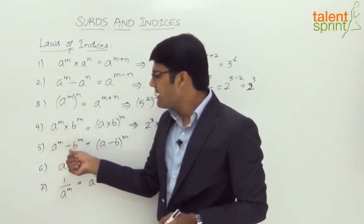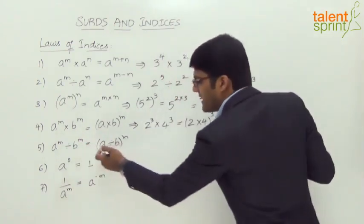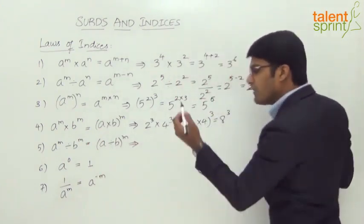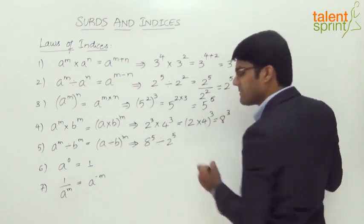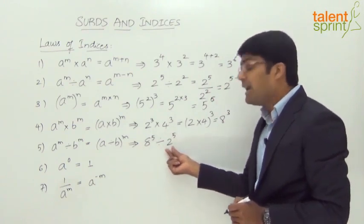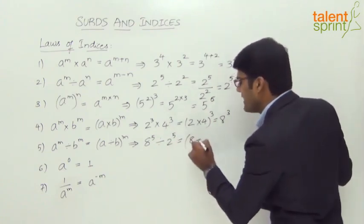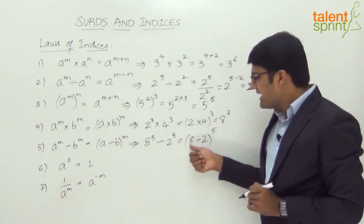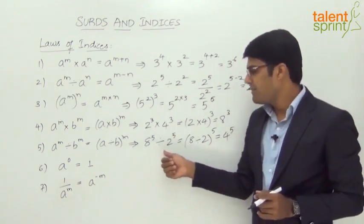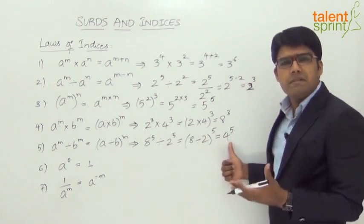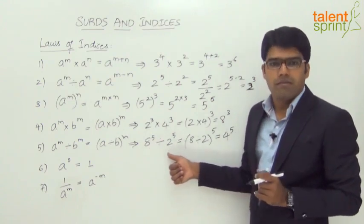The fifth rule is similar but uses division: a to the power of m divided by b to the power of m equals (a divided by b) whole to the power of m. For example, 8 to the power of 5 divided by 2 to the power of 5 — the bases are different but powers are equal — gives (8 divided by 2) to the power of 5, which is 4 to the power of 5. This is much easier to simplify than computing 8 to the power of 5 and dividing by 2 to the power of 5.